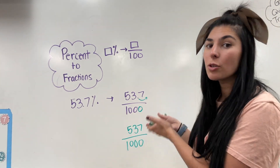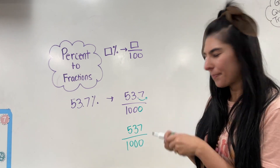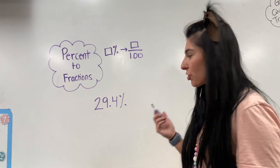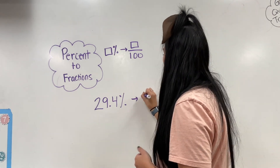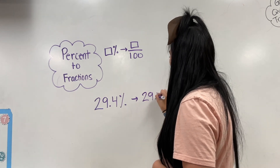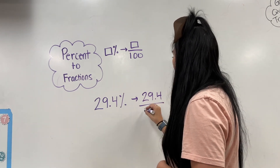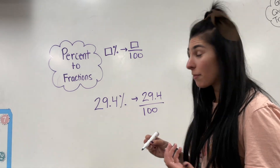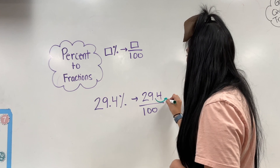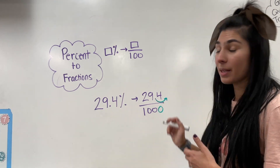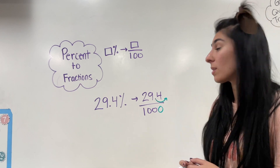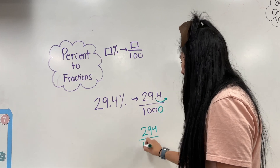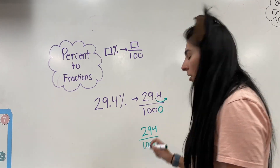If I had to jump the decimal two times, I would add two zeros at the bottom. Let's do one more. If I have 29.4% and want to convert it to a fraction, I keep 29.4 as my numerator over 100. There's that sneaky little decimal I need to move — I move it one time, so I add one zero. My final answer is 294/1000.